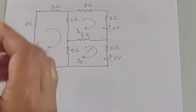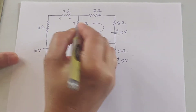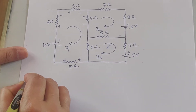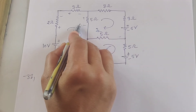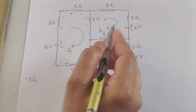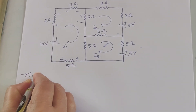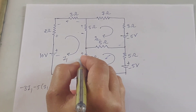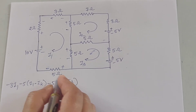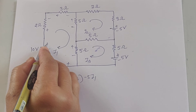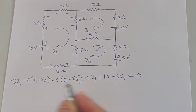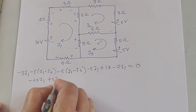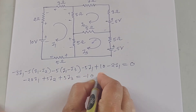Applying KVL for the first loop, marking the polarity: the current direction gives plus/minus markings. It is minus 2·I1 minus 3·I1, then the 5-ohm resistor is common for the first and second loop, so minus 5·(I1 minus I2), then another 5-ohm is common for first and third loop, so minus 5·(I1 minus I3), plus 10 volts equals zero. Solving gives: minus 20·I1 plus 5·I2 plus 5·I3 equals minus 10. That is your first equation.